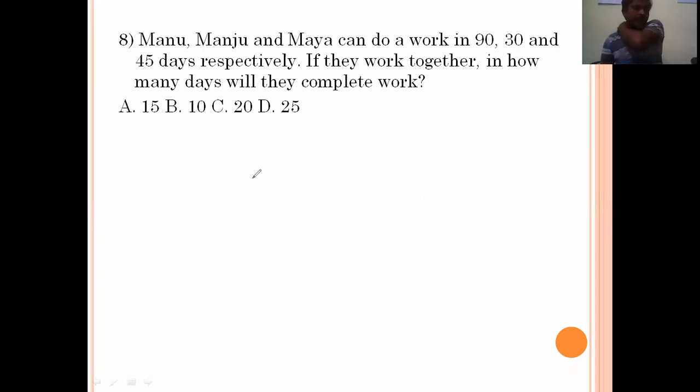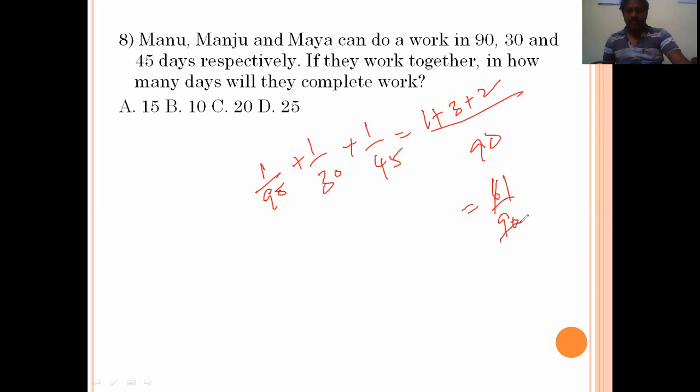Manu, Manju and Maya can do the work in 90, 30 and 45 days respectively. If they work together, in how many days will they complete the work? Manu's one day work is 1 by 90, Manju's one day work is 1 by 30, Maya's one day work is 1 by 45. LCM is 90. This equals 6 by 90, which is 1 by 15. So they complete the work in 15 days. Option C is the right answer.